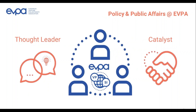Now that these housekeeping details are in order, let me give you a quick word about the European Venture Philanthropy Association. As you may already know, EVPA is a membership organization currently gathering more than 220 members based across all of Europe, which are interested in or practicing venture philanthropy and social investment. Our members include foundations, social investors, academics, financial institutions, as well as service providers.